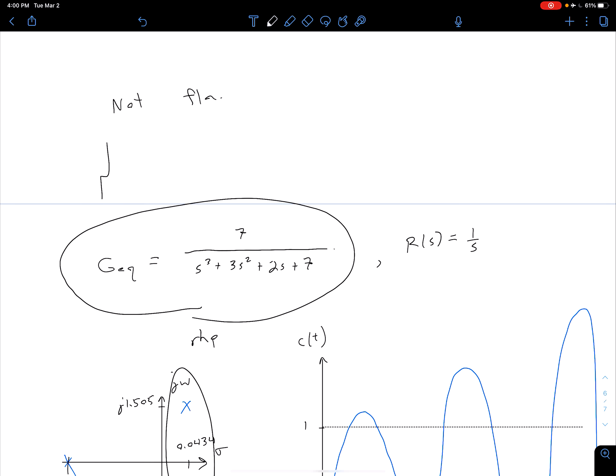And so just to briefly recap what those were, we see we're not missing any terms. We have an s cubed, s squared, an s to the 1, and an s to the 0 term, so no terms are missing so it's not unstable based on that merit.